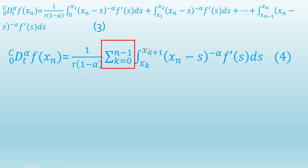In the summation notation the limits of integration are from x_k to x_{k+1}. If you substitute k=0 you get x_0 which equals 0 as the lower limit and x_1 as the upper limit, recovering the first term in equation 3. Using this summation notation we have obtained equation 4.